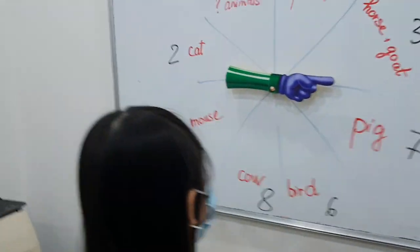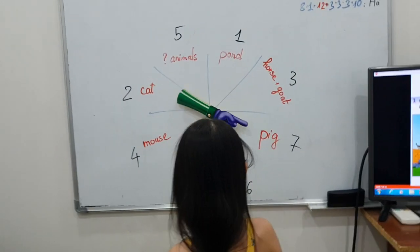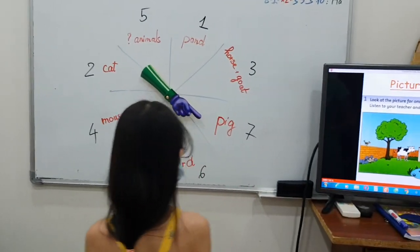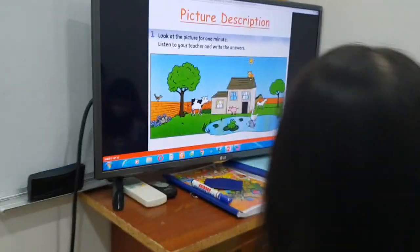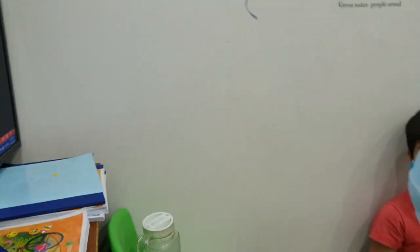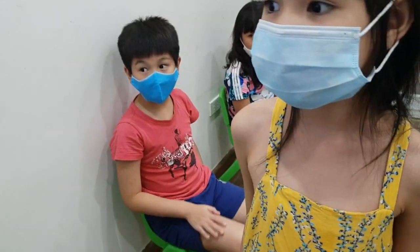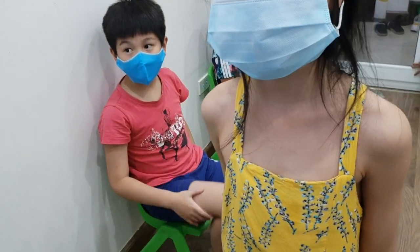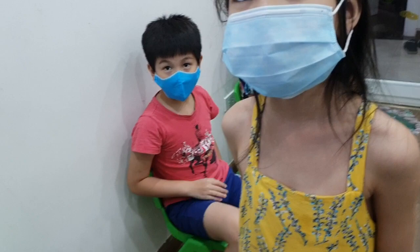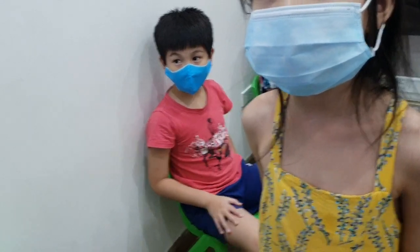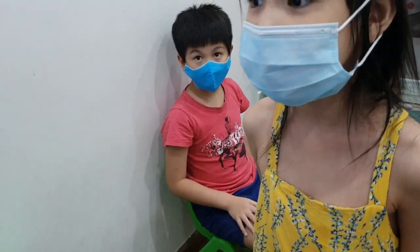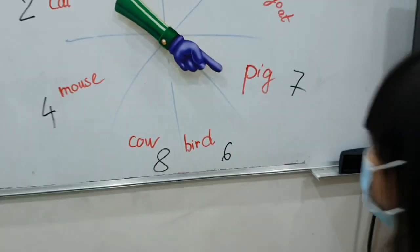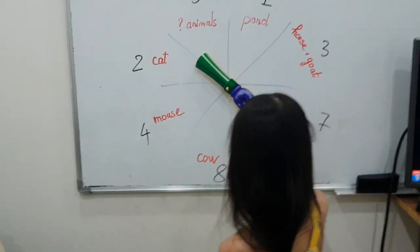Thank you. Now, Han, your turn. Come and spin. One, two, three. Seven. Where is the pig? There is a pig in front of the house. Good. Okay, so you got seven already. One, two, three. Two.